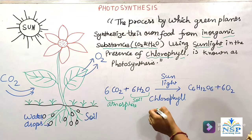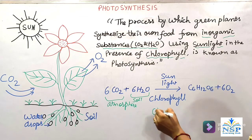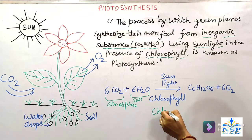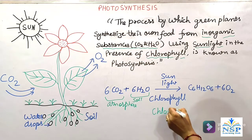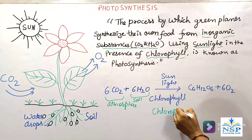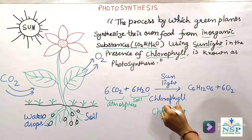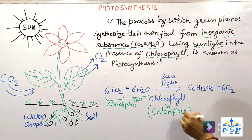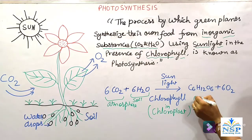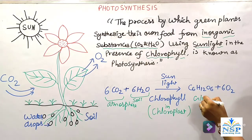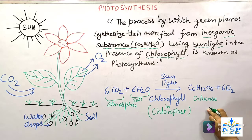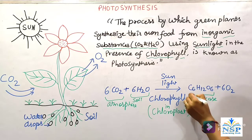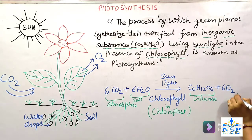Chlorophyll, chlorophyll के अंदर होता है — plants की leaves में। Glucose बनता है जो कि एक simple carbohydrate होता है। Food और oxygen release होती है।